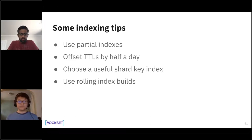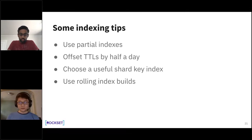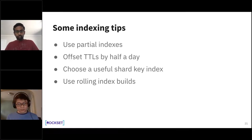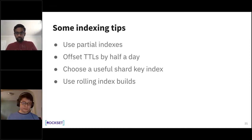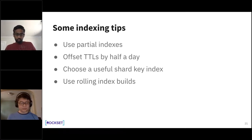Choosing a useful shard key index can eliminate the need for a separate index. When creating new indexes on a heavily loaded, high-QPS cluster, use a rolling index build: take a single secondary from each shard offline, start it as a standalone on a different port, build the index there, then shut it down and let it rejoin. Roll through all secondaries, then step down the primary and repeat. MongoDB Atlas paid tier has an option to do this automatically.